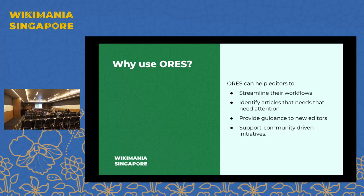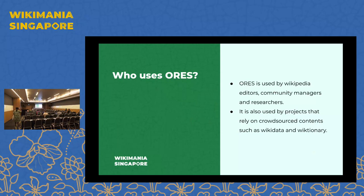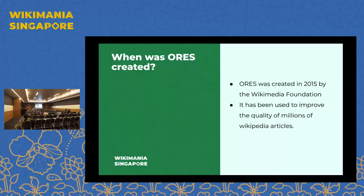ORES is also community support-driven, meaning it's open to most of the Wikimedia community as a whole. It helps people communicate and work on discussions together and share ideas on how best to improve the tool. ORES is used by editors, community managers, and researchers around the world, especially within the Wikimedia ecosystem. It was created in 2015 by the machine learning team.